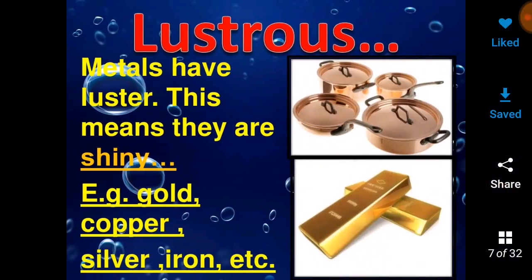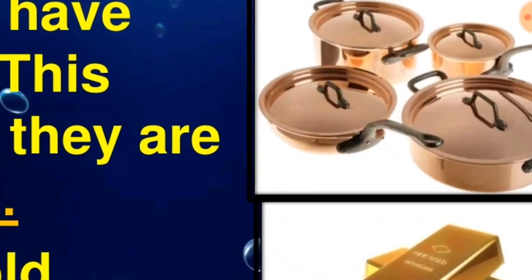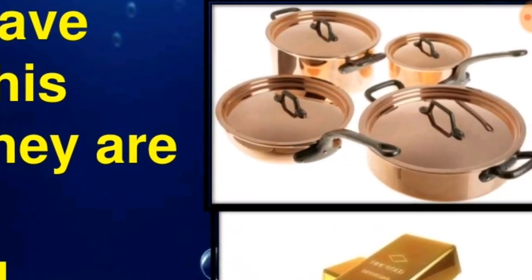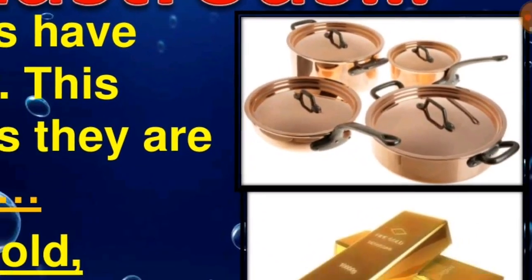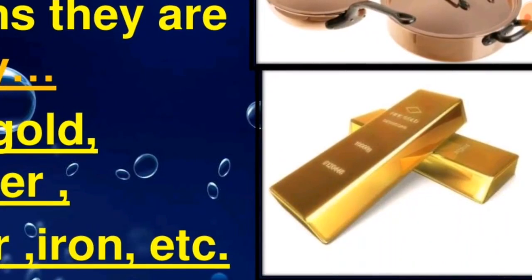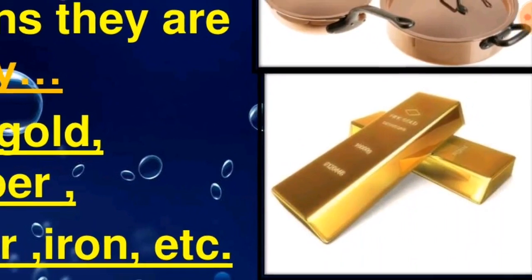Lustrous property. Metals generally have a lustrous or shining appearance. For example, gold, copper, silver, iron, etc. This is a diagram showing a copper vessel or copper pot. This is the gold bar for making jewelry.